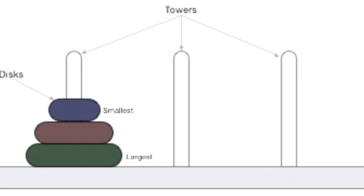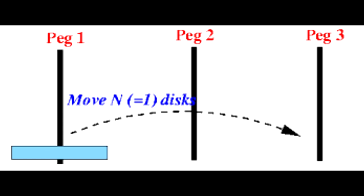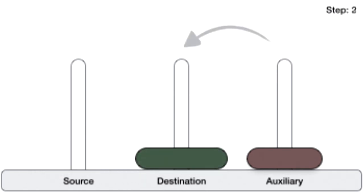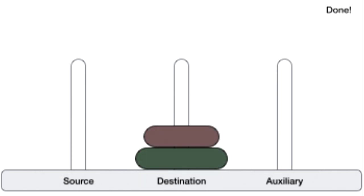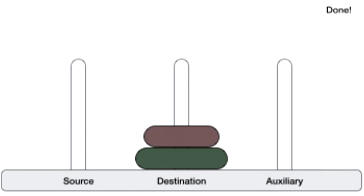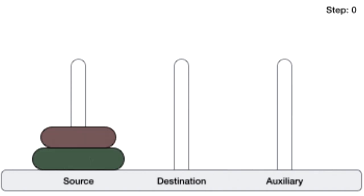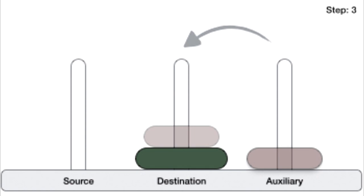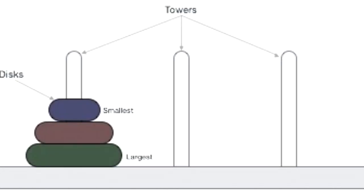To solve this problem, you move the discs around individually, place them back together, then move them to your destination. Starting with one disc: you can just move it directly from source to destination. With two discs: move the smaller disc to the auxiliary peg (the third tower), then move the larger disc to the destination, and finally move the smaller disc from the third tower back to the destination.